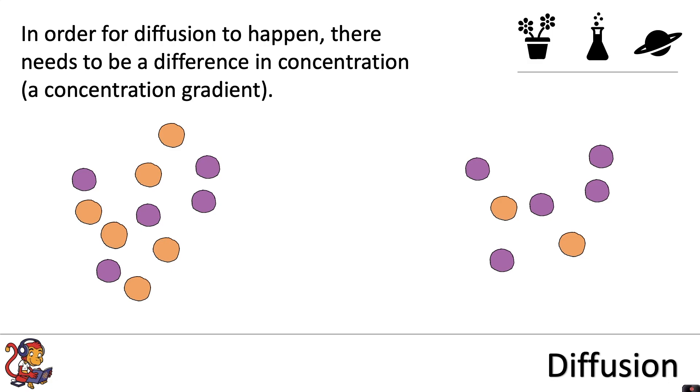So to balance things out, some orange particles will move by diffusion from a high to a low concentration.